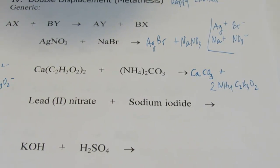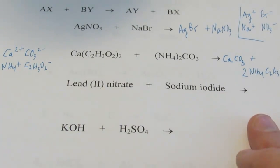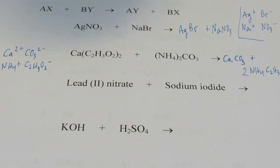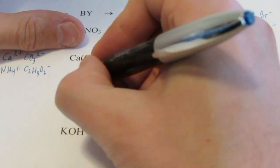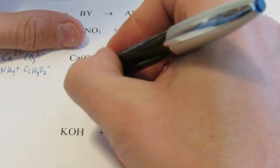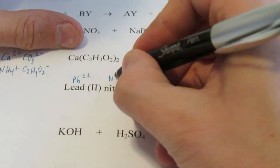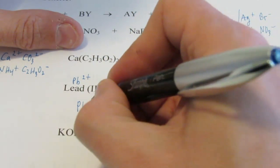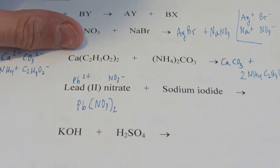That's double replacement, double displacement. Let's try another one. This one is a lot like your homework because it's written in words. So you're going to have to be able to write formulas without me giving them to you. Lead 2 nitrate. So lead 2 means it's Pb2+. That's what the Roman numeral is, remember, the charge of the metal ion. And nitrate is NO3 negative. So we're going to start with Pb(NO3)2. You need 2 nitrates to balance the charge of your lead 2 plus.